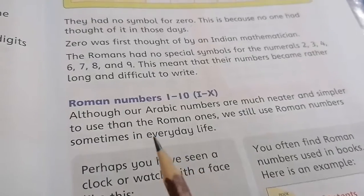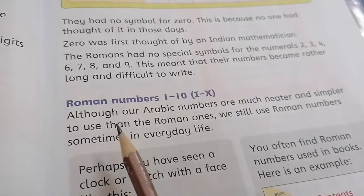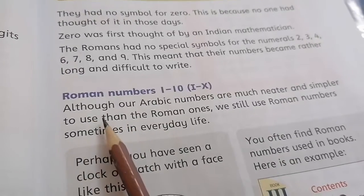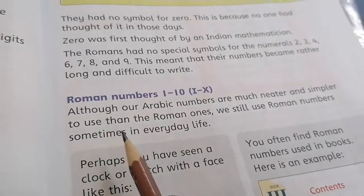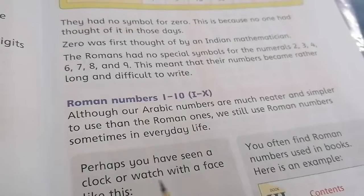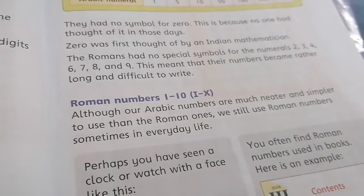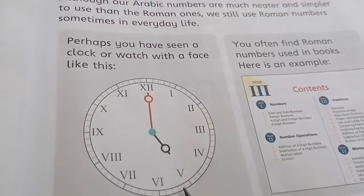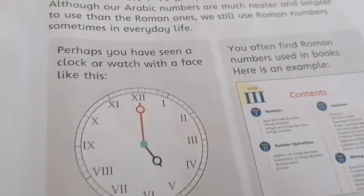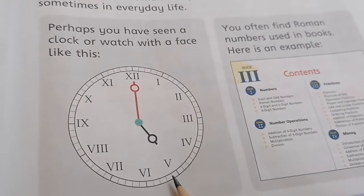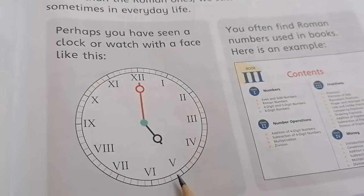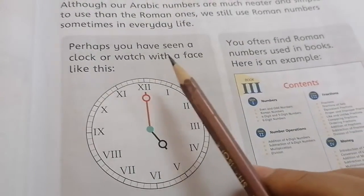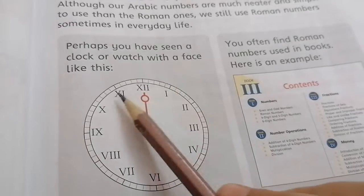Today, first of all, we will see the Roman numbers — how they are written and how we will use the symbols. Although our Arabic numbers are much nearer and simpler to us, Roman numbers are also simple. Have you seen the digital watch that we use in our houses? We have seen them in shops. There is a picture on page number three. Perhaps you have seen a clock or a watch with a face like this.